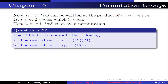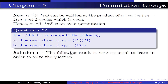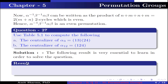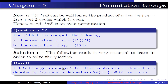Question number 27. Use table 5.1 to compute: Part A, the centralizer of alpha 3 = (1 3)(2 4); Part B, the centralizer of alpha 12 = (1 2 4). The centralizer of element A in group G is defined as the set of elements x in G such that xA = Ax — that is, it contains those elements of the group which commute with element A. This is table 5.1 as given in the book.